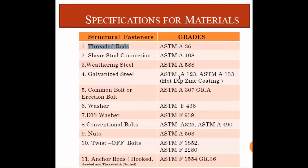We also use ASTM A153 grade. For erection bolts, we use ASTM A307 Grade A. For washers, we use ASTM F436, and for DDA washers we use ASTM F959. For conventional bolts, we use ASTM A325.